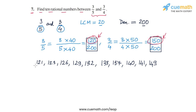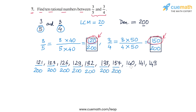Now I just divide all of these by 200: 121/200, 123/200, 126/200, 129/200, 133/200, 137/200, 140/200 — which could be reduced to a lower form — 141/200, and 149/200.